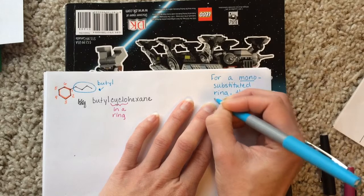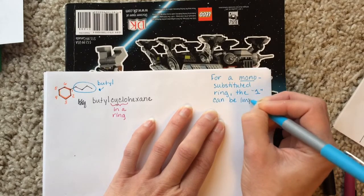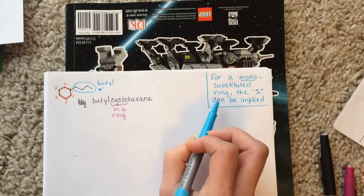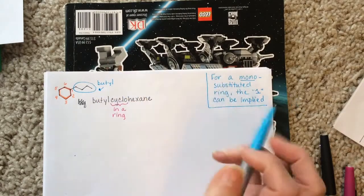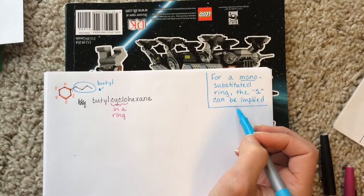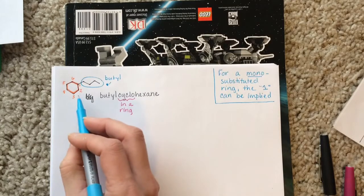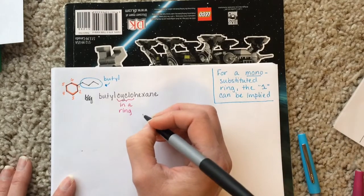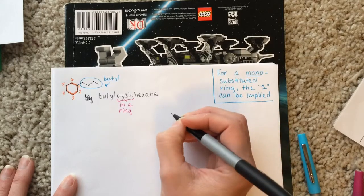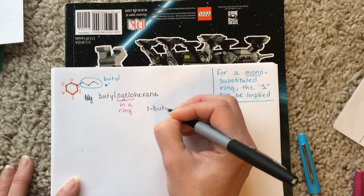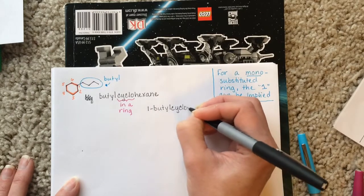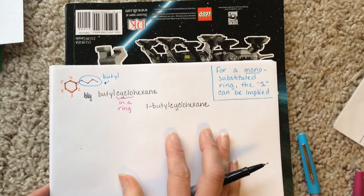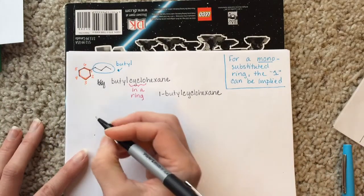The number one can be implied — it's an option to leave it off. You can never leave the number one off of a straight chain alkane name, ever. And you can never leave the number one off when naming a ring with multiple substituents. You can only omit it if it's a ring with one substituent. If that confuses you and you're worried about remembering when to include it, just always include the one — it's not wrong to say "1-butylcyclohexane." It's a little redundant but not wrong. Let's do another example.